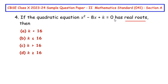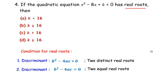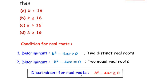In this question a quadratic equation is given and they have said that it has real roots. So let us understand the conditions for real roots. The discriminant b² - 4ac greater than 0 gives two distinct real roots, and b² - 4ac equal to 0 gives two equal real roots. Since the question doesn't specify distinct or equal, we combine both and write: b² - 4ac ≥ 0 for real roots.